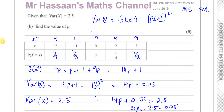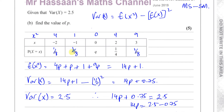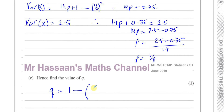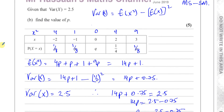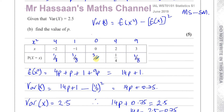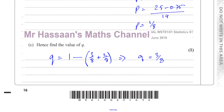Since all the P values are one eighth, we have three eighths plus one quarter plus Q equals 1. Three eighths plus one quarter is three eighths plus two eighths, which is five eighths. So Q equals 1 minus five eighths, which is three eighths. Q is three eighths. We now have all the probability values and they all add up to 1, as they should. So now we can go on to part D.